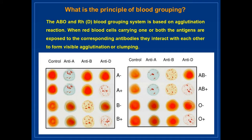What is the principle of blood grouping? The ABO and Rh blood grouping system is based on the agglutination reaction. When red blood cells carrying one or both the antigens are exposed to the corresponding antibodies, they interact with each other to form visible agglutination or clumping. For example, you can see in the picture that agglutination formed only with antisera A, so it is A negative blood group.